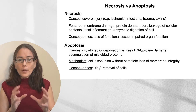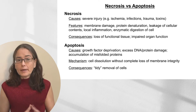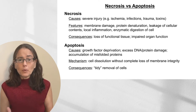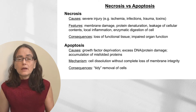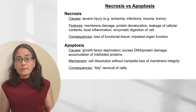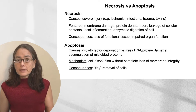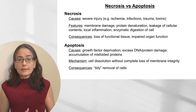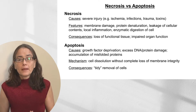This is going to be a quick overview because you can't talk about apoptosis without also mentioning necrosis — it's important to compare and contrast. Necrosis is typically caused by severe injury such as ischemia, infections, trauma, or toxins, and is characterized by membrane damage, protein denaturation, leakage of cellular contents, local inflammation, and enzymatic digestion of the cell. Typically you'll end up with loss of functional tissue and impaired organ function.